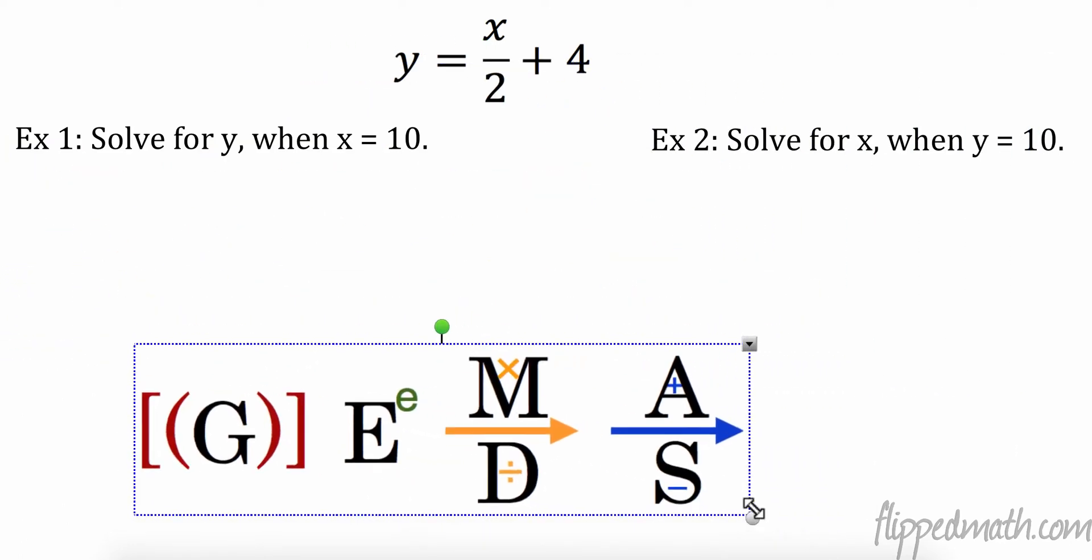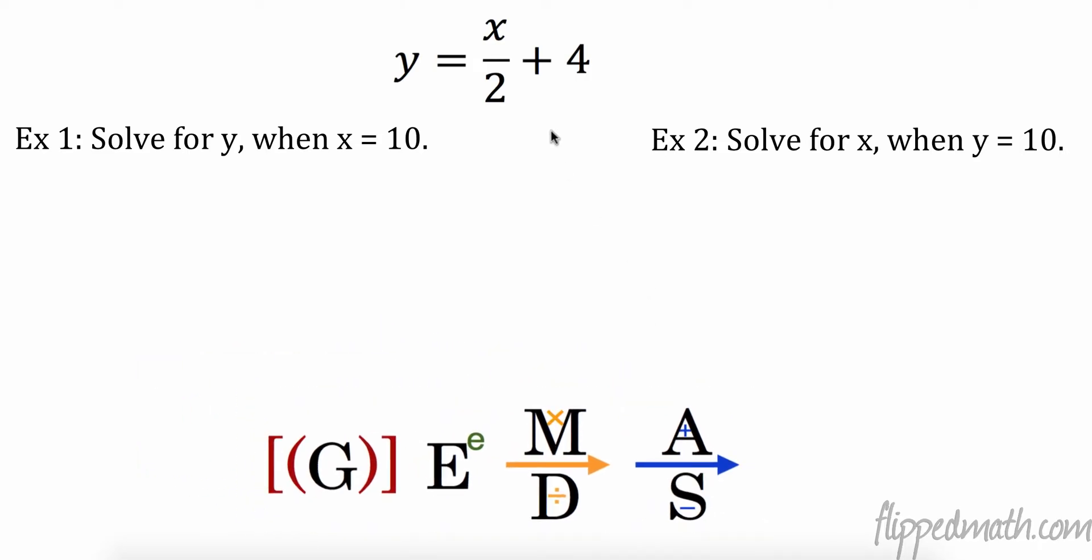So let's take a look and see the difference between the two. Part of the trick for you is going to be deciding which you need to do at which time. So I have this equation, Y equals X divided by 2 plus 4. Over here, we're going to do example 1 first. So solve for Y when X is 10. So the very first thing I want you to do is rewrite the equation and plug in what you have. 10 is X, so instead of X, I put 10 divided by 2 plus 4. Now I'm looking at this equation. My variable that I want to get is all by itself. I don't need to move things from one side to the other. That means I'm going to do GEMDAS in the order it's written. So I have division, and I have adding. So I'm going to divide first. So 10 divided by 2 is 5 plus 4. Now I'm going to add. 5 plus 4 is 9.